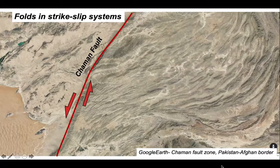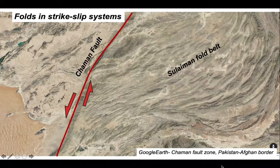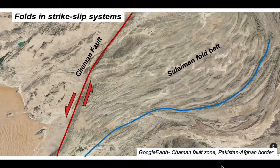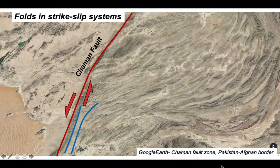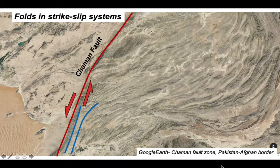Over in the east is an important fold belt, the Suleiman fold belt, and we can trace these folds in towards the fault zone. As we get very close to the fault zone, the fold axes, their hinge lines, appear to be parallel to the fault.